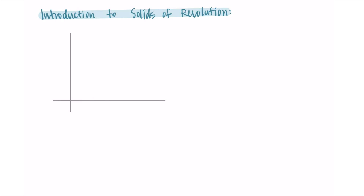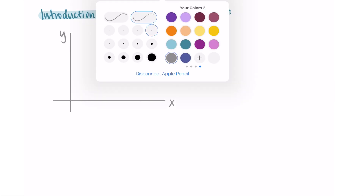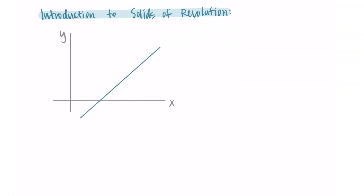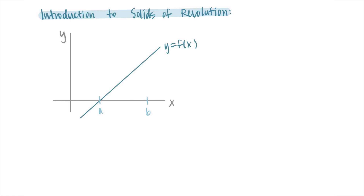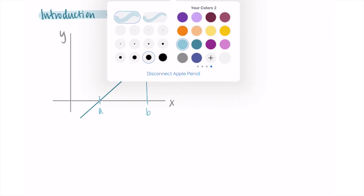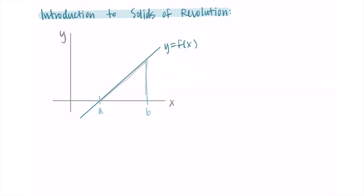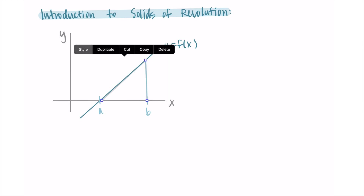Let me draw some axes — an x-axis and a y-axis — and let's say we have some function. I'm going to draw it as a line, but it could be anything: y equals f of x. If we look at an interval from a to b, we've already talked about finding the area between the function and the horizontal axis by doing an integral. We know how to find this area using an integral — that's what we defined an integral to do.